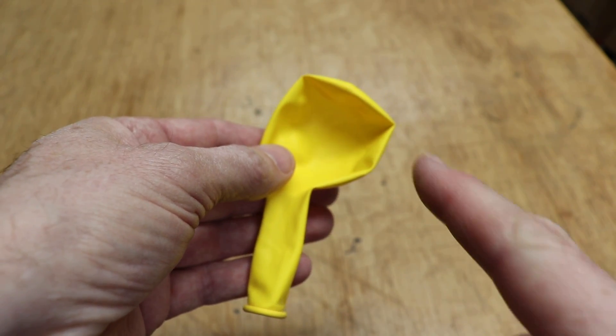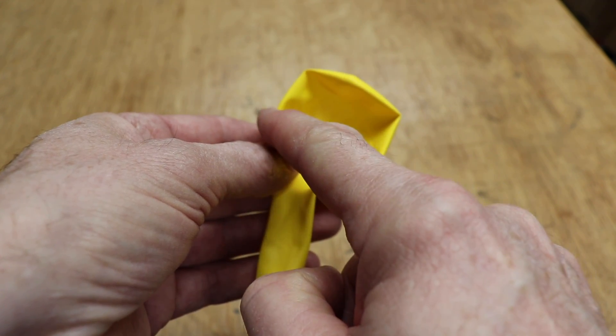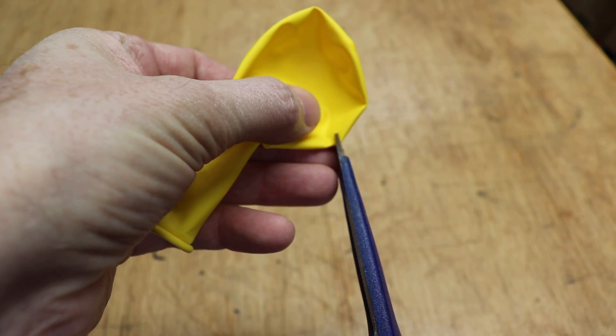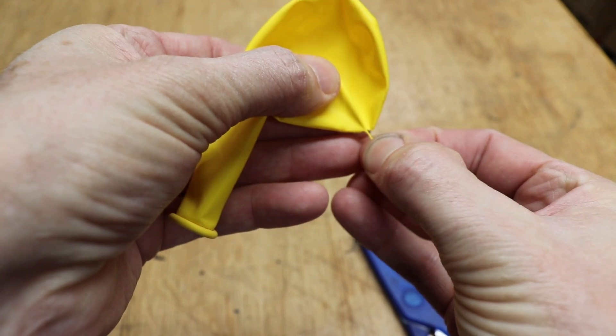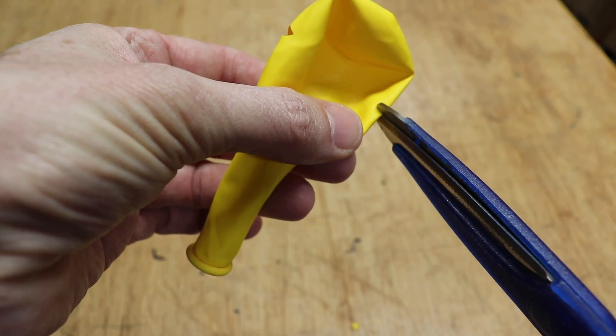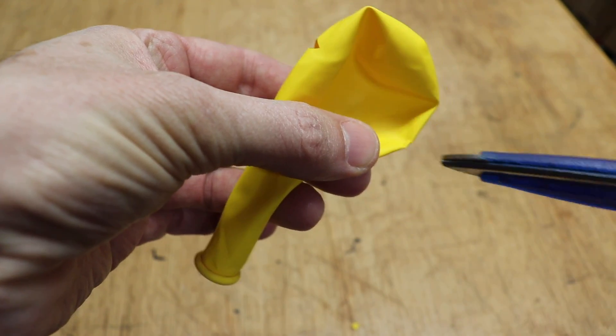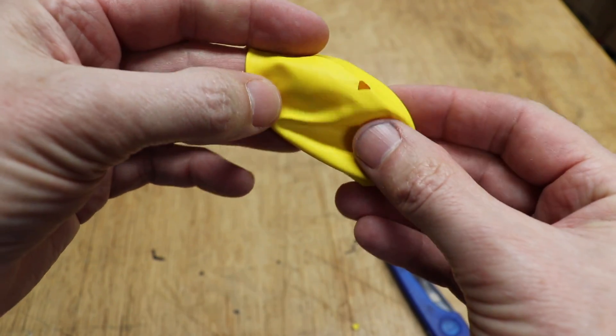Now take your balloon and we're going to cut two holes in it, and the best place to do that is right where the balloon is folded. So just take your scissors and make two small cuts, pull the rubber out, do the same to the other side, and then you've got two holes just like that.